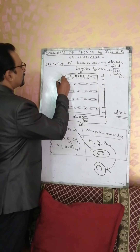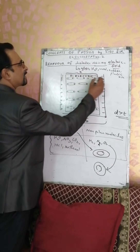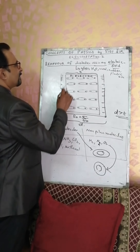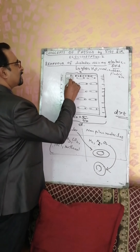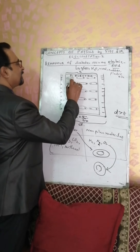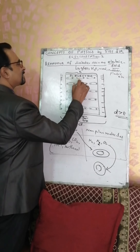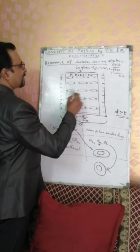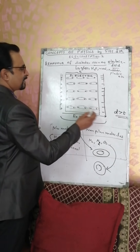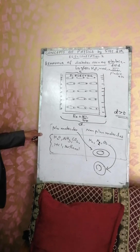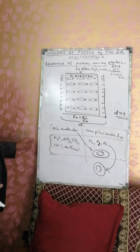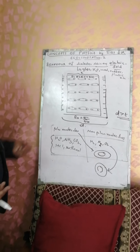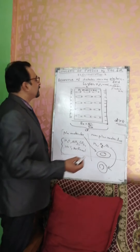Near to the positive charge, the negative charge will be there; that is polarization. Each atom inside the dielectric slab undergoes this polarization. Now because of this polarization, what is happening to the slab? That is what we are going to study.